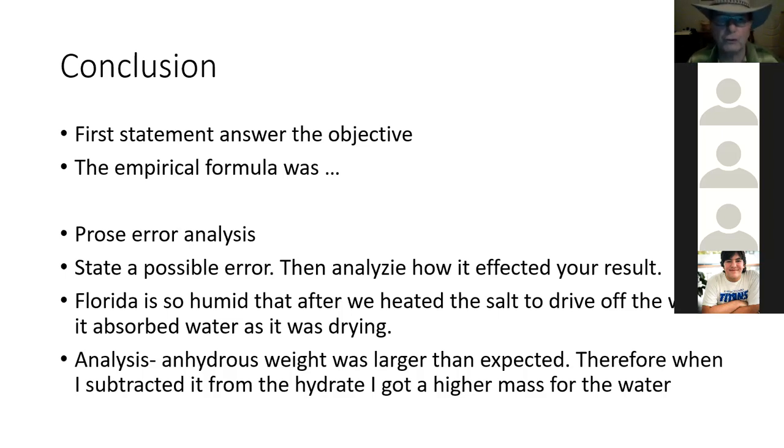First statement of your conclusion. What I want you to do is answer the objective. If the objective was determine the empirical formula of a copper, chlorine, and water compound, for the conclusion, simple first statement: the empirical formula was. Then, I want you to get into error analysis. I want you to state a possible error. Then, after you've stated that error, I want you to analyze how it affected your result.